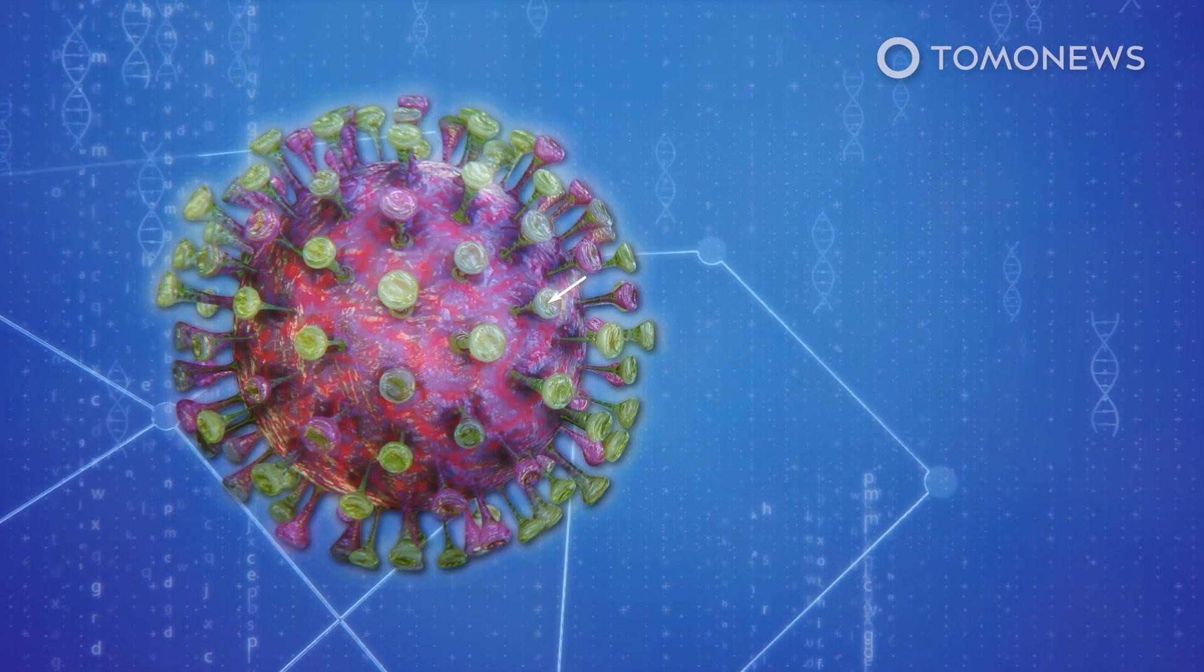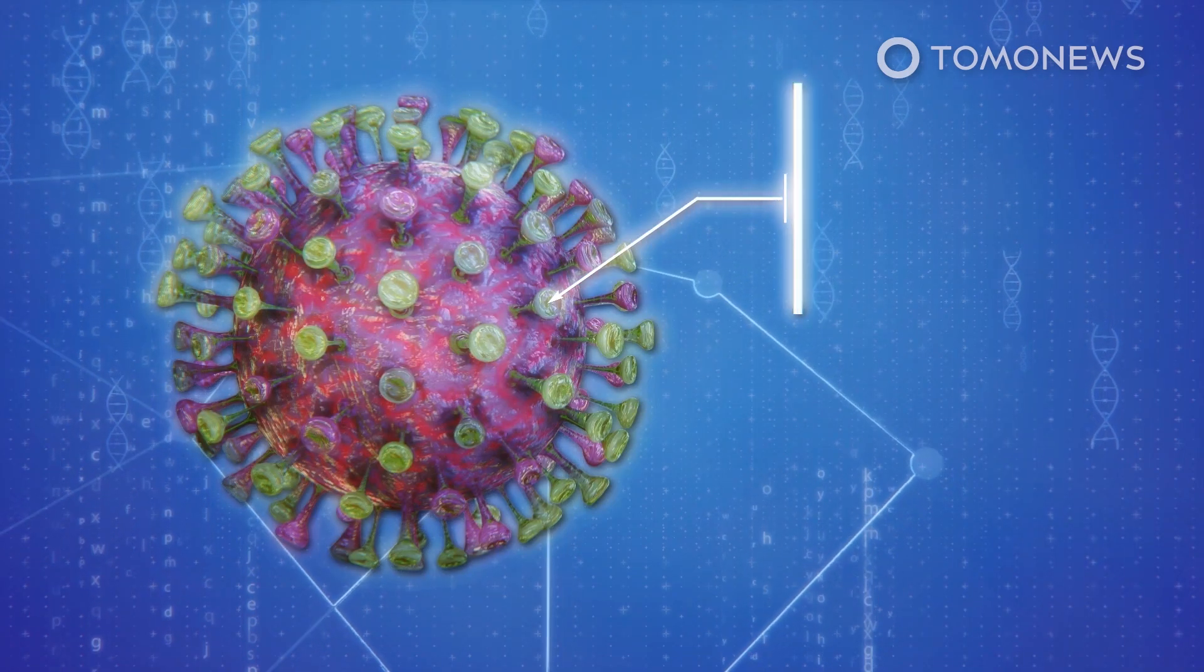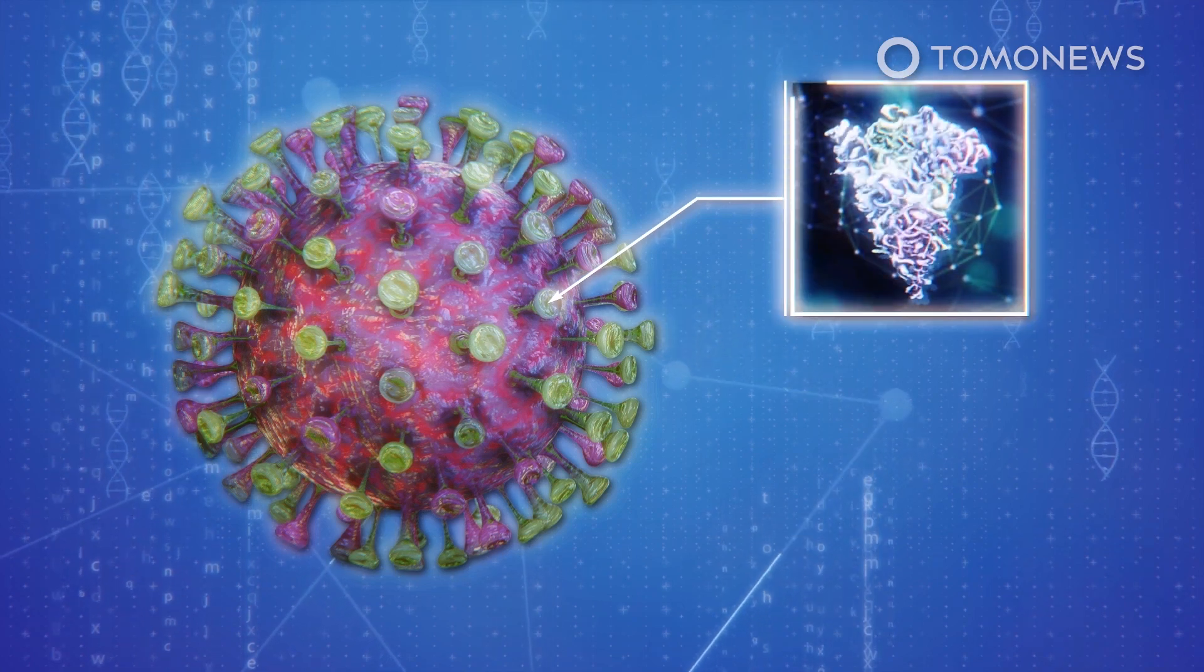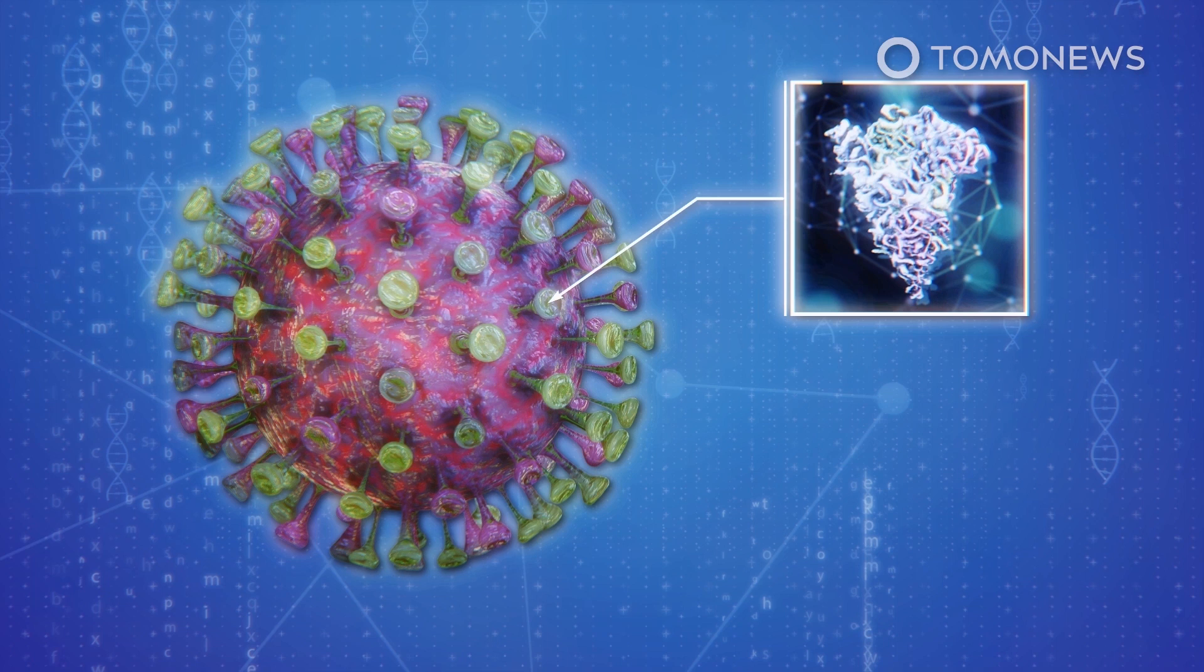The coronavirus' outer coating is covered in spike proteins, which give the virus its crown-like appearance. The spike protein possesses receptor-binding domains, or RBDs, that the virus uses to pry open receptors before penetrating the cellular membrane.